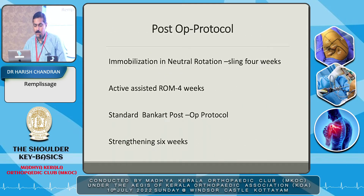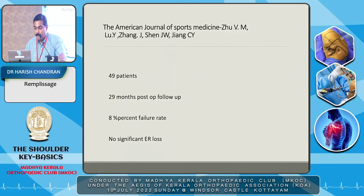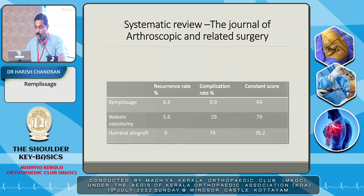Post-operative protocol: immobilization in neutral rotation with a sling for about four weeks, then active-assisted range of movements for four weeks, with strengthening activities after six weeks — standard Bankart protocols can be followed. Supporting literature includes an American Journal of Sports Medicine study with 49 patients, 29-month follow-up, 8% failure rate, and no significant external rotation loss. A systematic review in the Journal of Arthroscopic and Related Surgery comparing Remplissage, osteotomies, and allografts found recurrence rate slightly higher with Remplissage, but complication rates and constant scores were quite good.